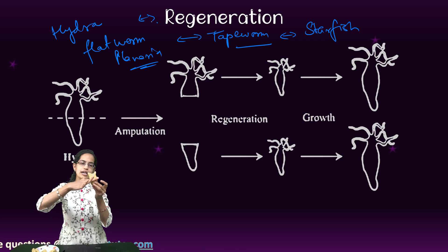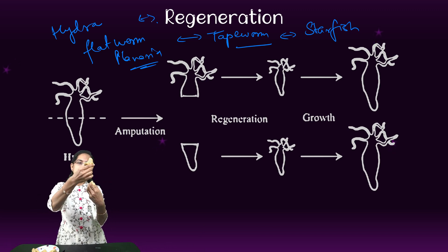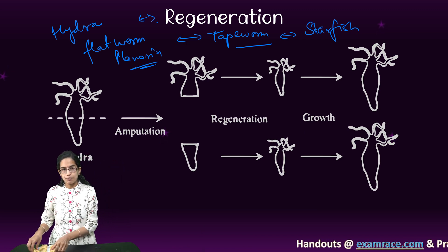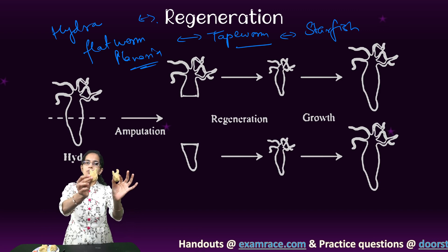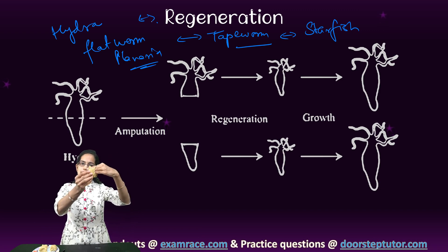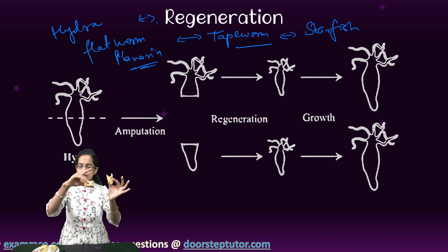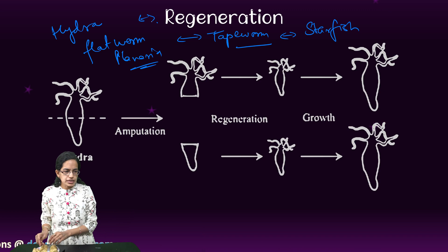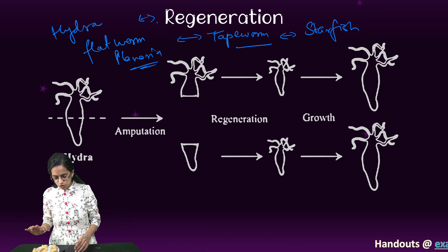Let's look at how regeneration works. If a hydra is cut into two parts — the upper half and the lower half — each part regenerates into an independent hydra. The upper half develops a new lower half, and the lower half develops a new upper half. This is the process of regeneration.